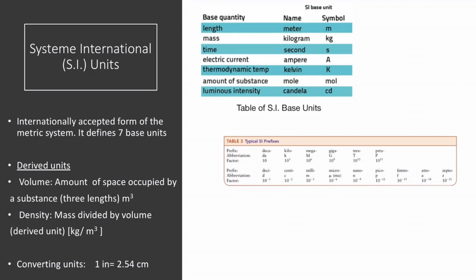The next topic is the SI units. These are the internationally accepted form of the metric system. It defines seven base units. In chemistry, the most frequently used base units are: length with the base unit of meter, mass with the base unit of kilogram, time with the base unit of second, thermodynamic temperature with the base unit Kelvin, and amount of substance with the base unit mole.